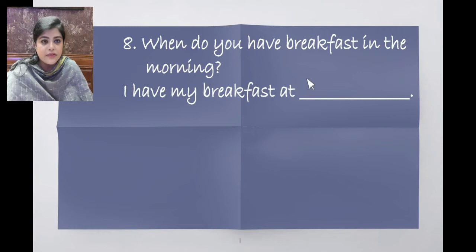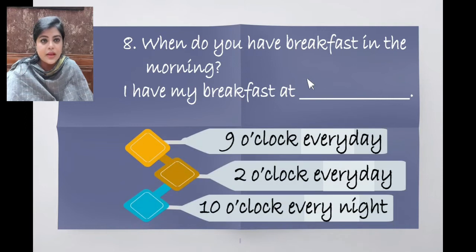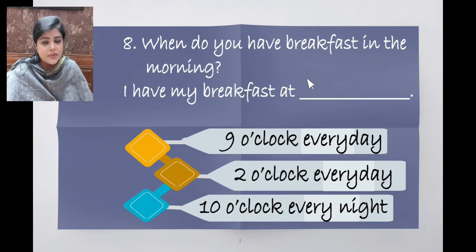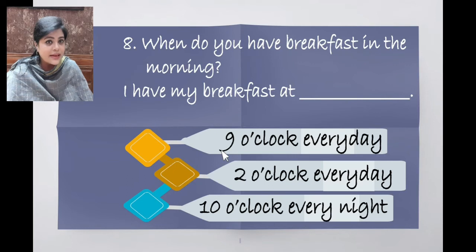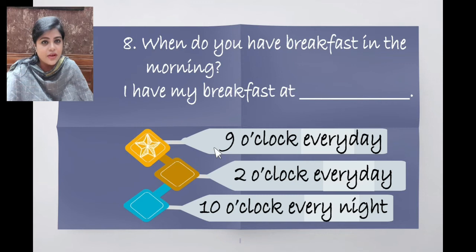When do you have breakfast in the morning? I have my breakfast at dash. Options: 9 o'clock every day, 2 o'clock every day, 10 o'clock every night. Breakfast is in the morning, so the correct answer is 9 o'clock every day. I have my breakfast at 9 o'clock every day.